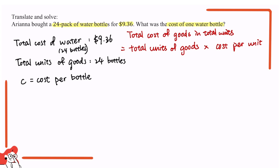So we have total cost of water, which is $9.36, equals to 24 bottles times cost per bottle, which is C. Now we have the equation.